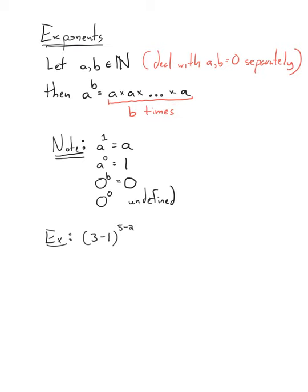The names for these things: a is called the base, and b is called the exponent — you might also see the word power.